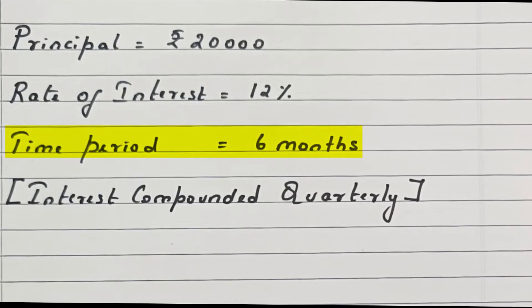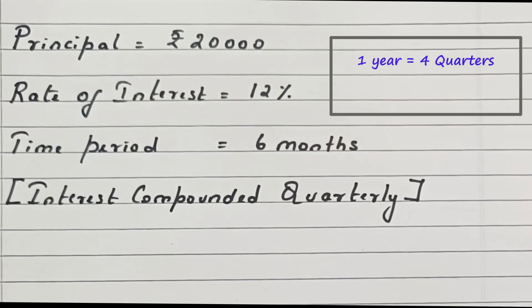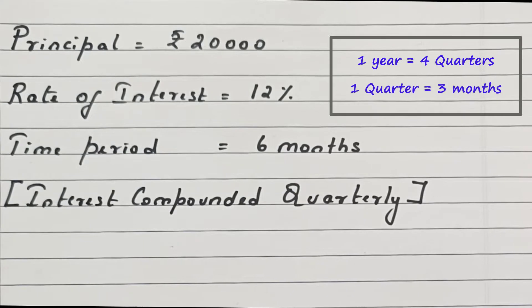And interest is compounded quarterly. Remember, when interest is compounded quarterly, we need to divide the rate by 4 and multiply the time period by 4, because one year is divided into four quarters and one quarter is equal to 3 months.